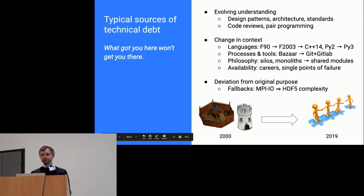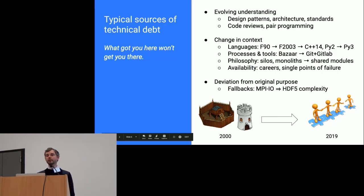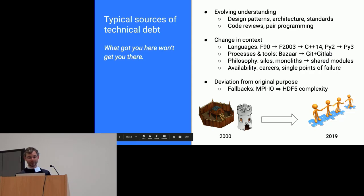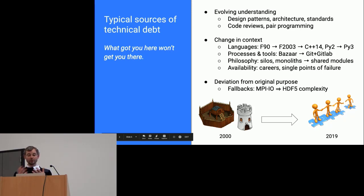Typical sources of technical debt: when you start something and during the effort your understanding evolves, and at some point you realize you have to do it a different way or your development will slow down. You also have changes in context — for example, evolution of Fortran standards, switching from Fortran to C++, or going from Python 2 to Python 3. The scheduled death of Python 2 suddenly made all Python 2 code become technical debt.